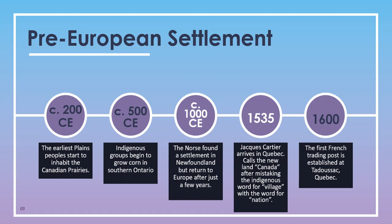In 1535, Jacques Cartier, one of the early French explorers, arrived in Quebec and called the new land Canada after mistaking a local indigenous word for village with the word nation. Around the year 1600, the first French trading post was established at Tadoussac, Quebec.